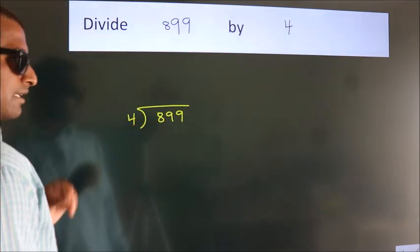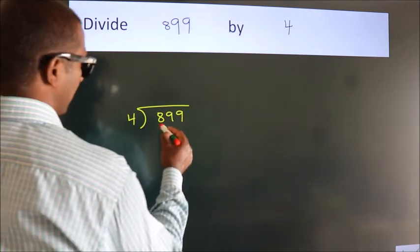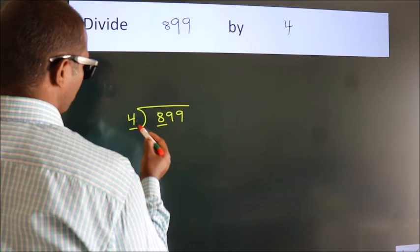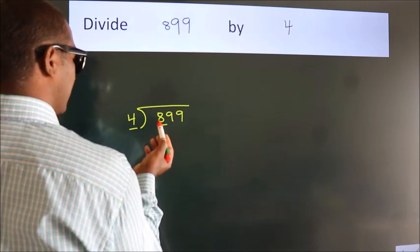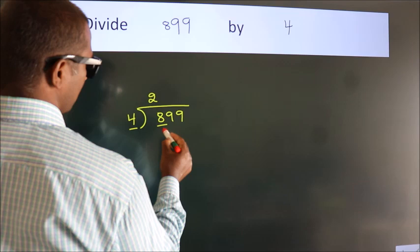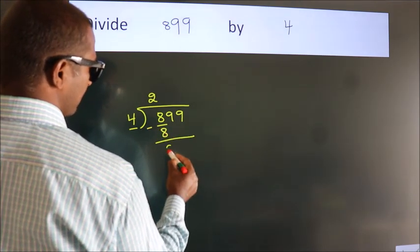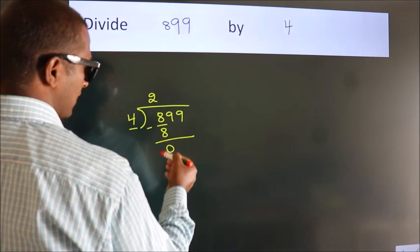This is your step 1. Next, here we have 8, here 4. When do we get 8? In 4 table. 4 twos, 8. Now, we should subtract. We get 0.